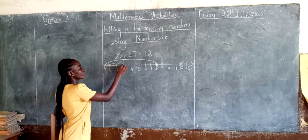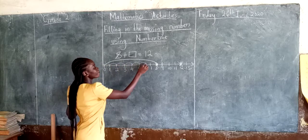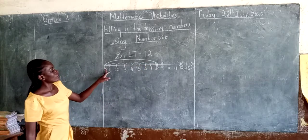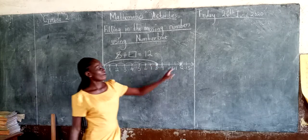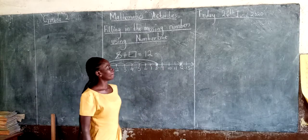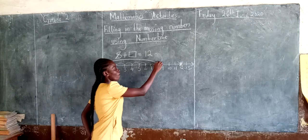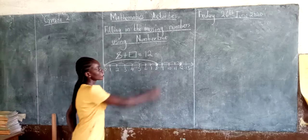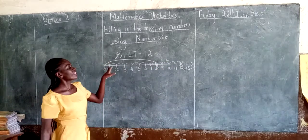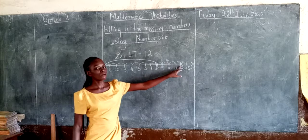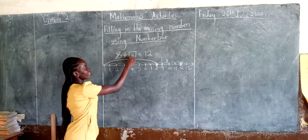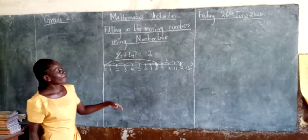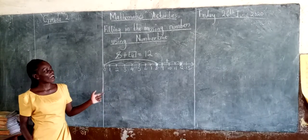One, two, three, four, five, six, seven, eight. So we look from eight to twelve — how many steps? Let's count together: one, two, three, four. So those are four steps. Eight plus four is equal to twelve. So our answer is four. I hope you've reminded yourself what we learned last time.